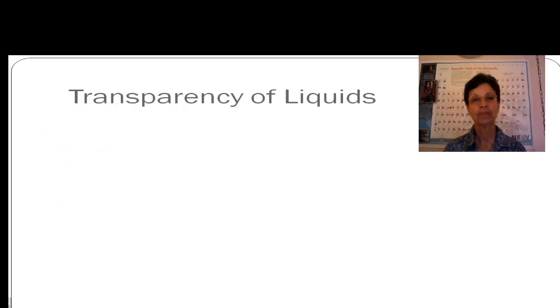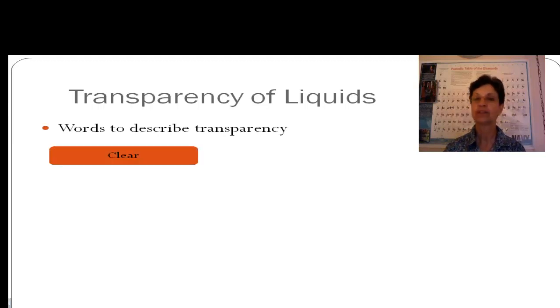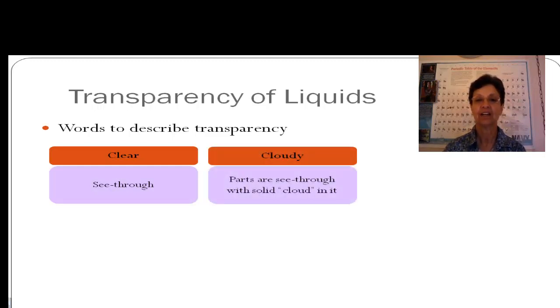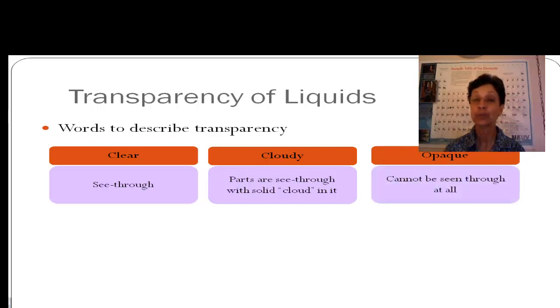We also have to describe things like transparency of liquids. Here are some words to describe transparency. If we say something is clear, a liquid is clear, we can see right through it. If we say that it is cloudy, you can tell that it is kind of foggy in that liquid. There is a cloud inside of it, so you cannot clearly see through it. Or it may be opaque, meaning you cannot see through it at all.